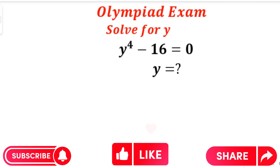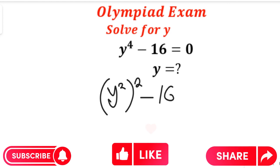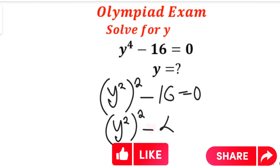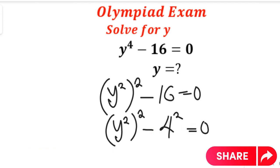To solve this question, we simplify y to the power of 4. Remember that y to the power of 4 can be simplified to give us y to the power of 2, all squared. So we'll have y squared, all squared, minus 16 equal to 0. And note that 4 squared equals 16.